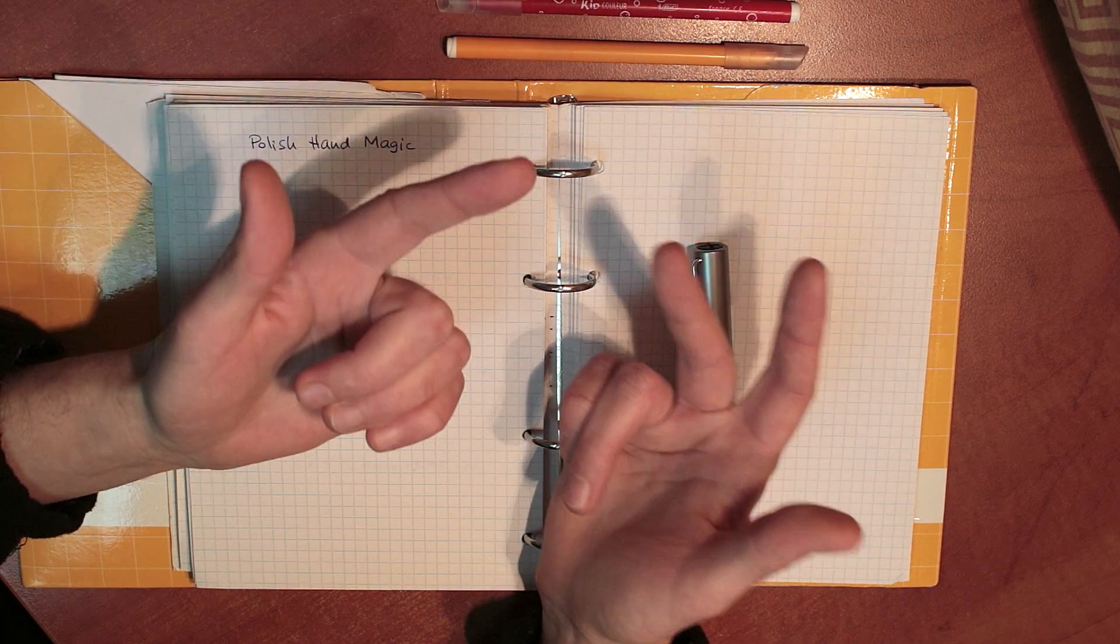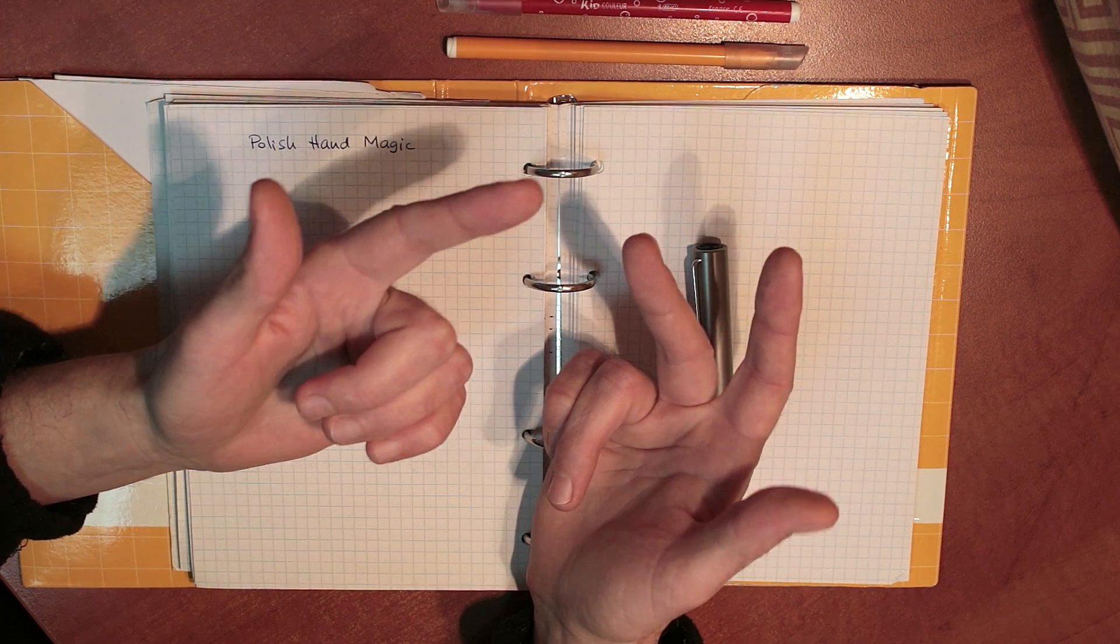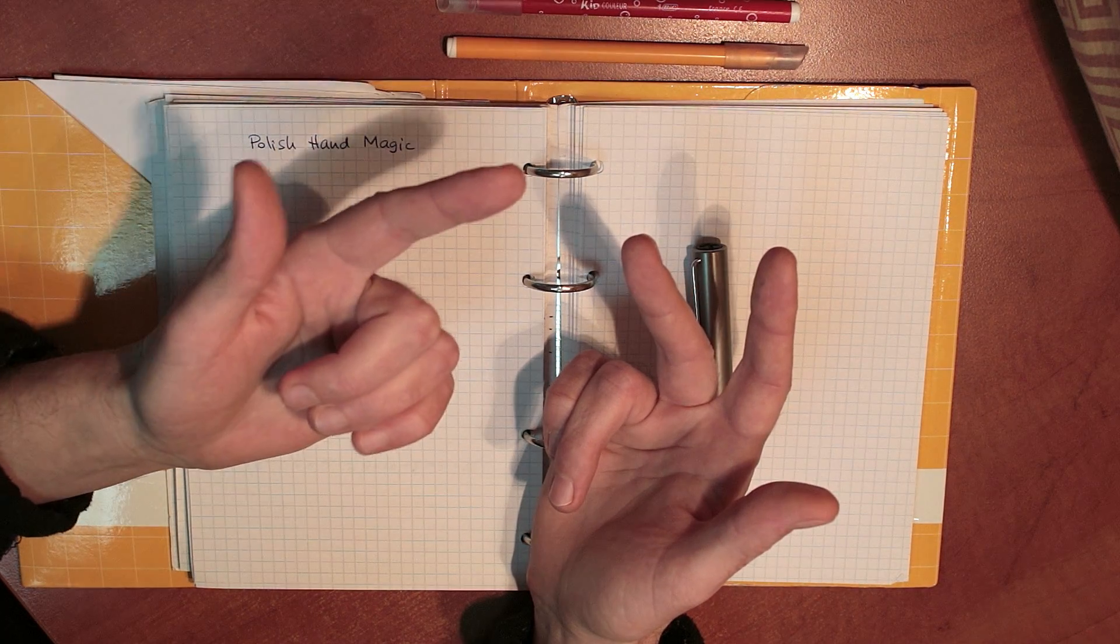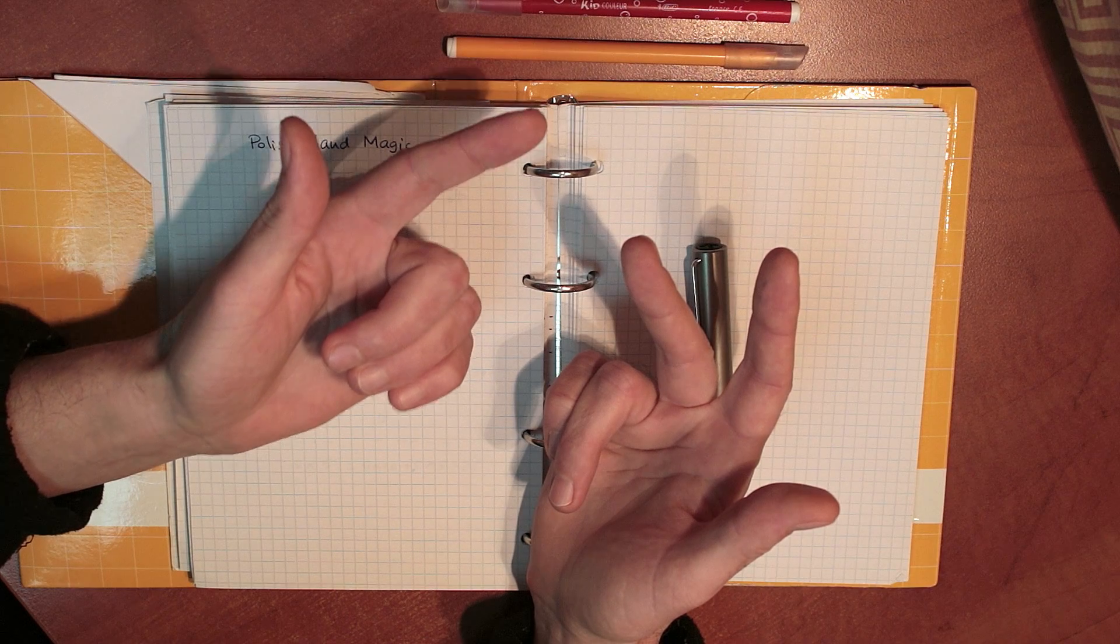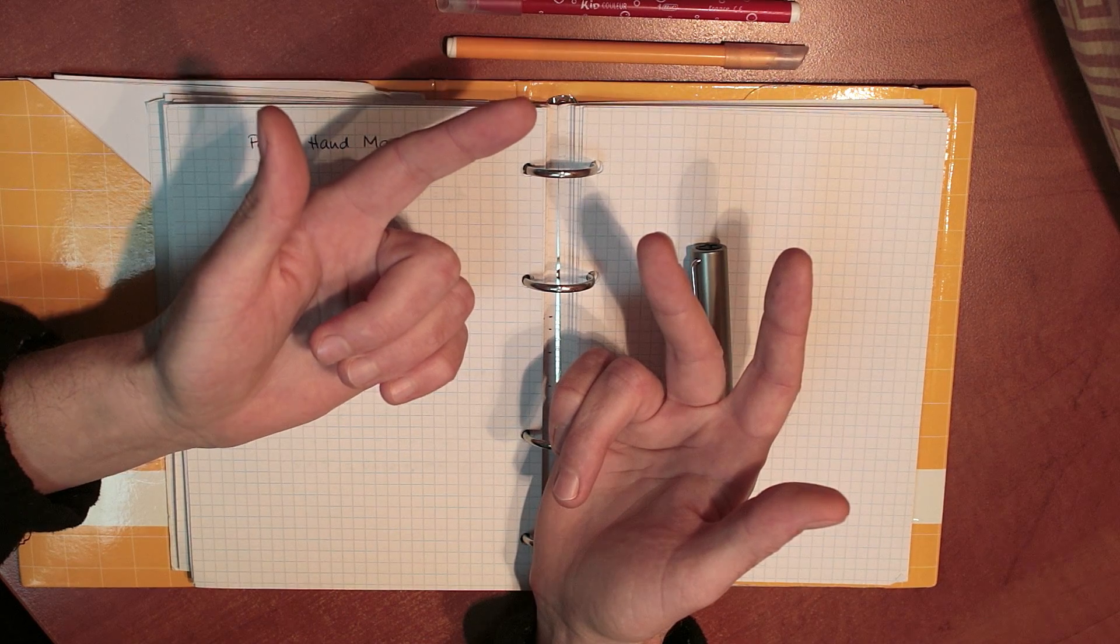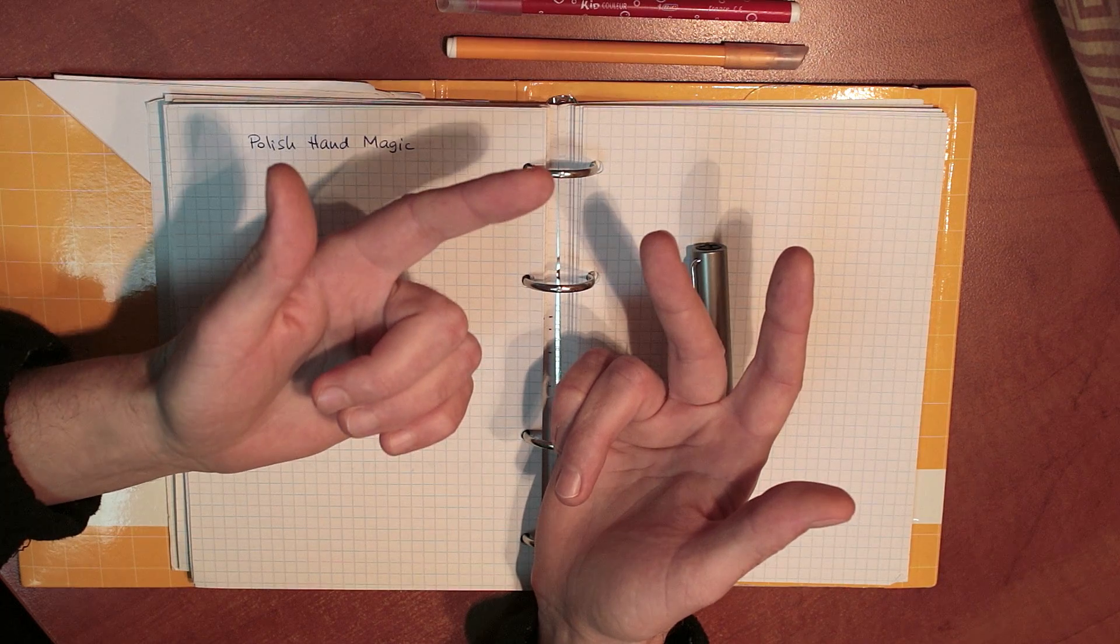So in this case, 7 times 8. I have 5 raised fingers, so that's 5 tens, 50. And I multiply the number of lowered fingers, which is 6. So the result is 56. Amazingly, it's correct.